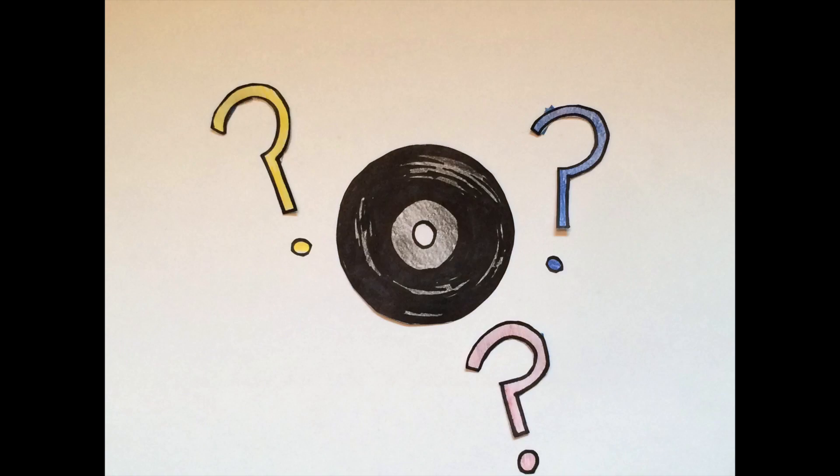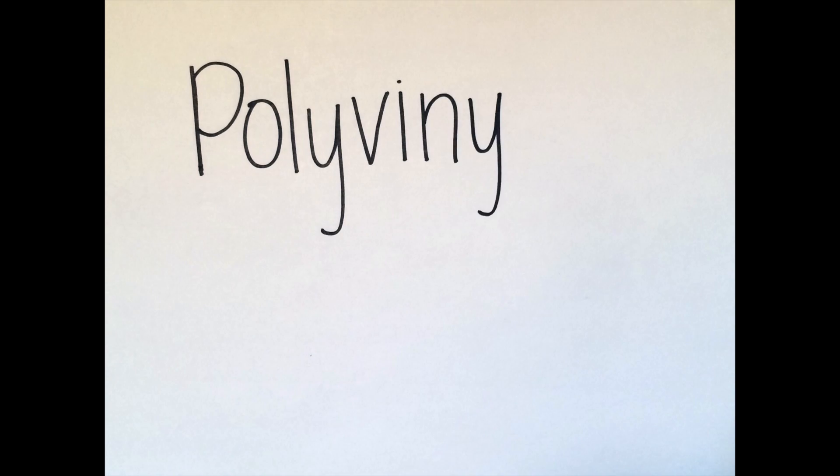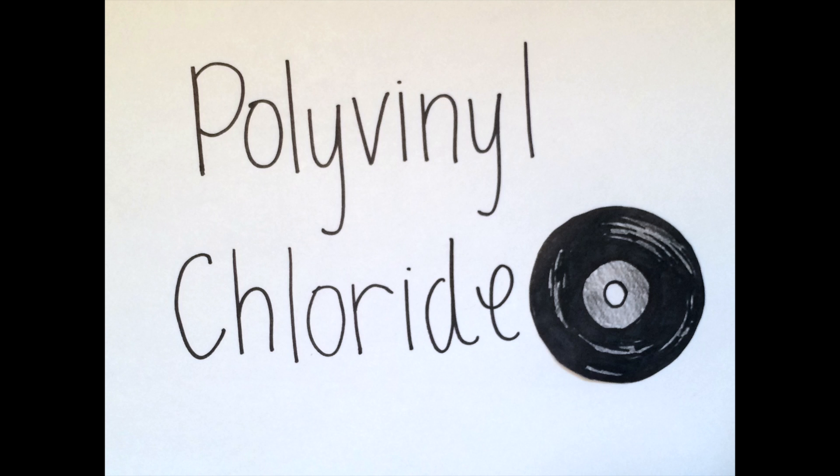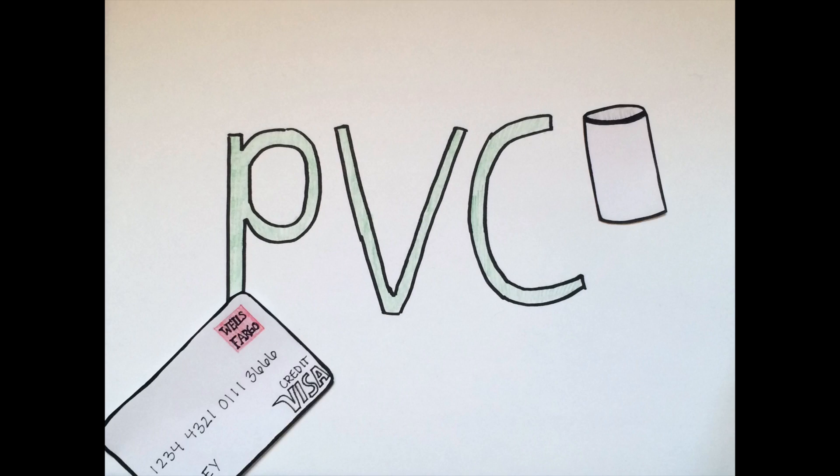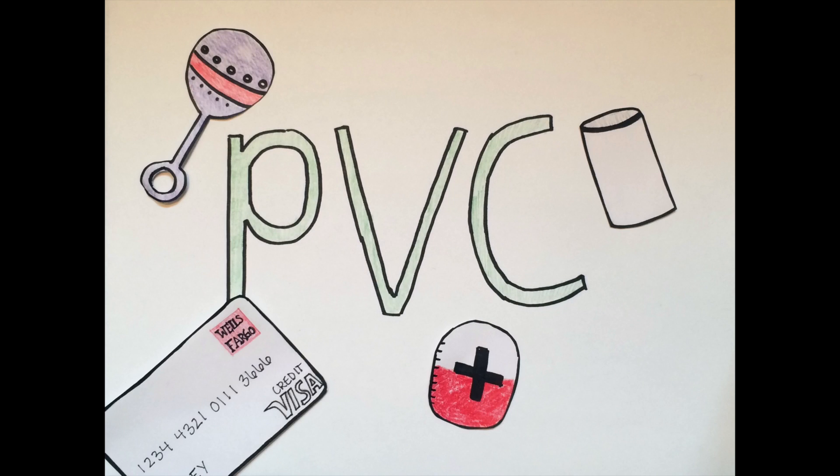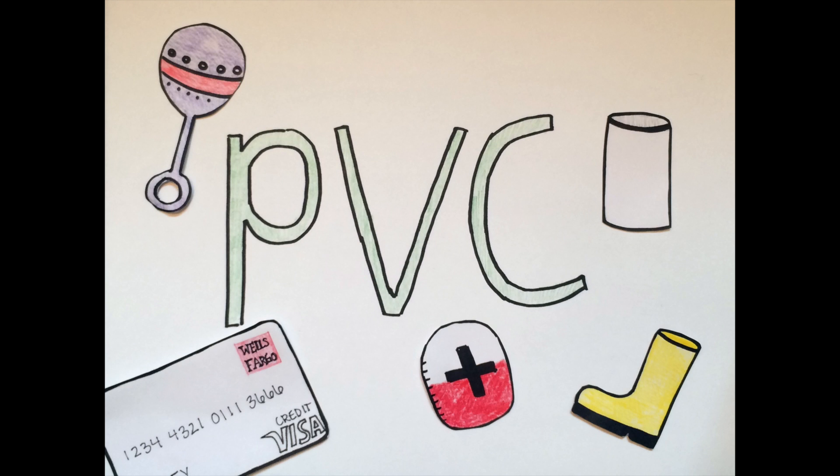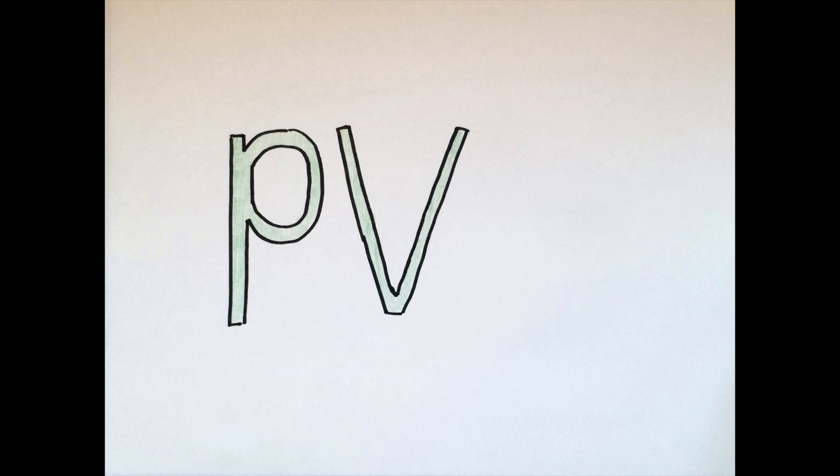What are vinyl records? Well, vinyl records are made from polyvinyl chloride or PVC. PVC pipes, credit cards, blood bags, children's toys, and even shoes are made from PVC. PVC has two main parts.